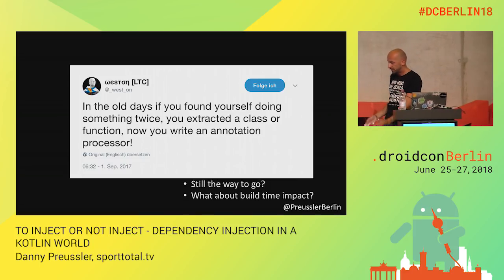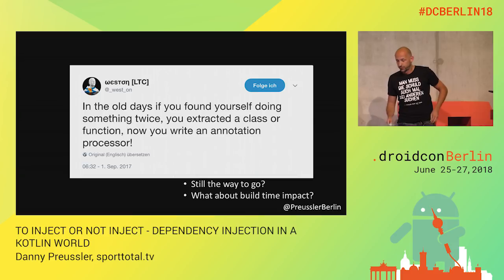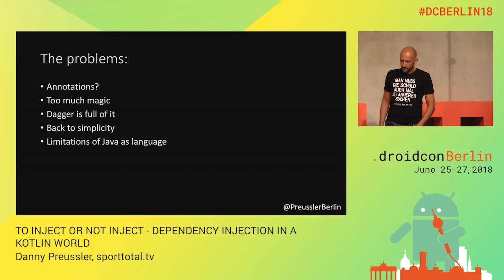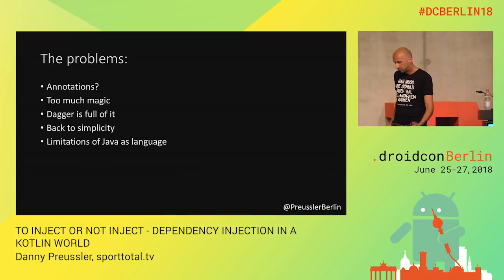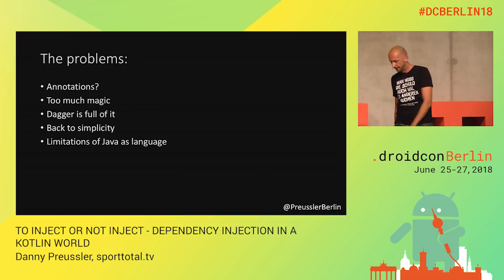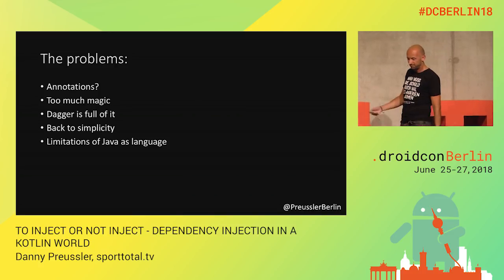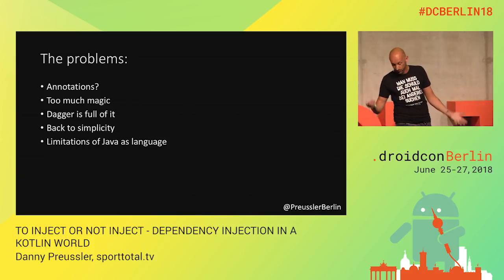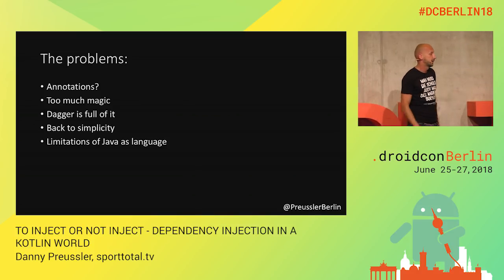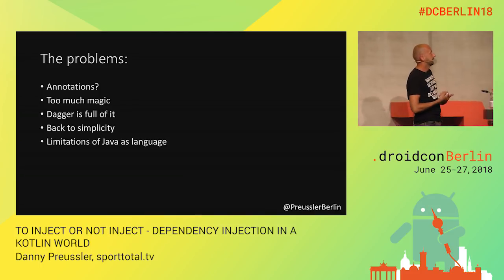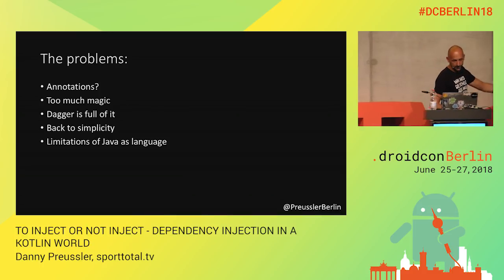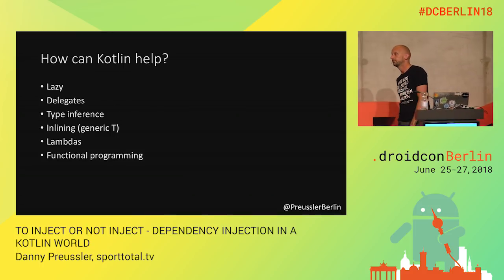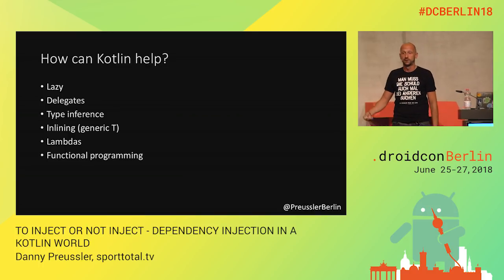So that's an issue — maybe we can question annotation processors a bit. Especially looking at Dagger, a lot of people don't like the magic behind it. Also, annotation processing came partly because of the lack of the Java language — it gave us something Java couldn't give us. But we have Kotlin now, and Kotlin brought a lot of things we don't have in Java.